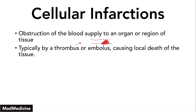An embolus is when part of that thrombus actually breaks off and then travels downstream into smaller and smaller blood vessels as the blood vessels branch off, and gets lodged in a blood vessel away from its original site. This is called an embolus.